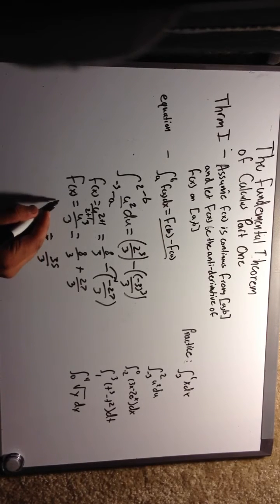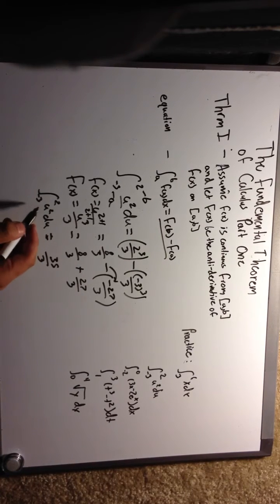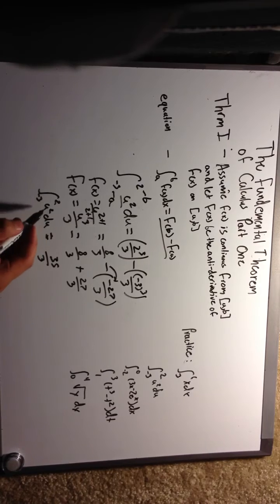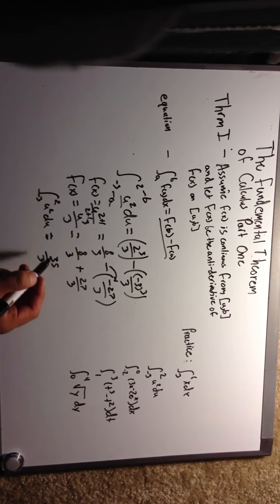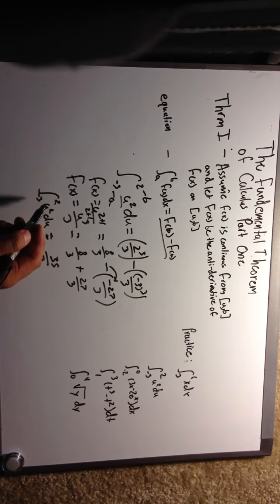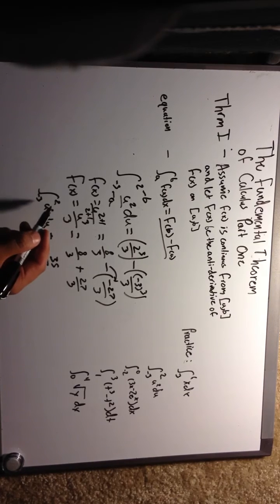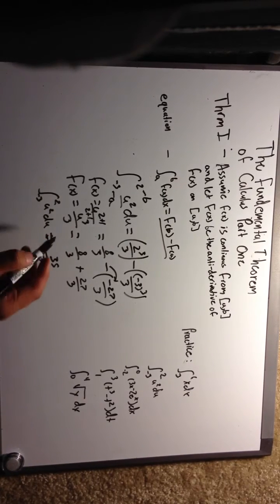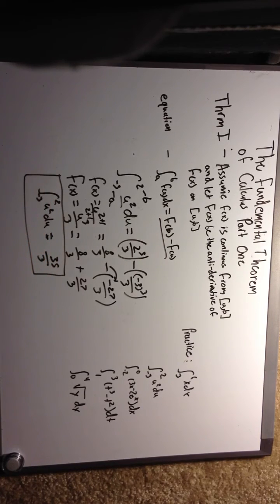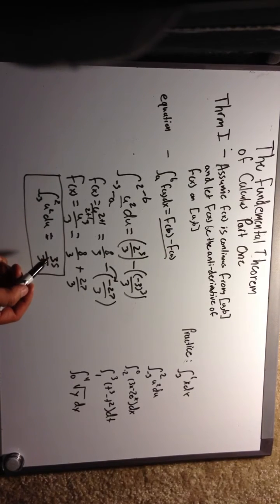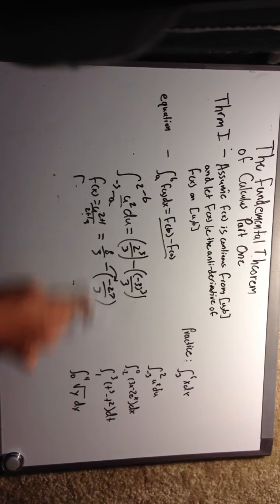So the integral from negative 3 to 2 of u squared du is equal to 35 over 3. That means the area of u squared on the interval negative 3 to 2, integrating with respect to u, is equal to 35 over 3.